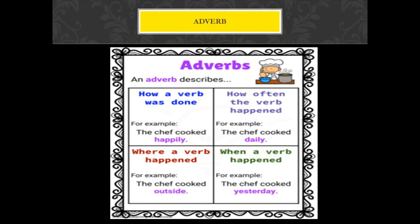What are adverbs? Adverbs describe how a verb was done. For example, 'The chef cooked happily' — cooked is the verb; how was the chef cooking? Happily. Adverbs also tell how often: 'The chef cooked daily.' Where the verb happened: 'The chef cooked outside the house.' And when it happened: 'The chef cooked yesterday.'